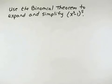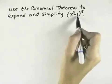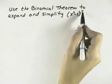We want to use the binomial theorem to expand and simplify the quantity x squared minus 1 to the fifth power.